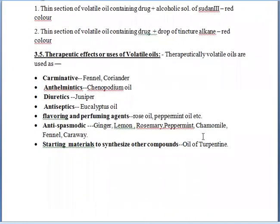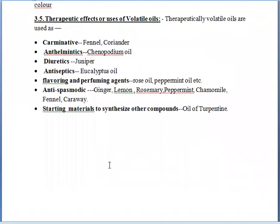Now we will study about the uses of volatile oils. First use: it works as a carminative, which prevents the formation of gas — for example, fennel or coriander. Then anthelmintics — for example, chenopodium oil. Diuretics — juniper. Antiseptic — eucalyptus oil. Flavoring and perfuming agent — rose oil, peppermint oil, etc. Antispasmodic — ginger, lemon, rosemary, peppermint, chamomile, caraway. Some drugs are also used as starting materials for the synthesis of other compounds — for example, oil and turpentine.